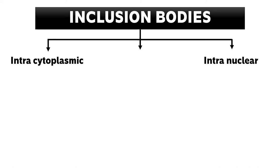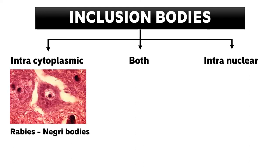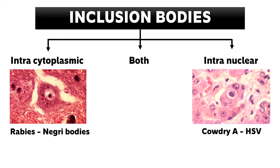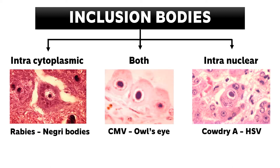We can classify the viral inclusion bodies into three different categories: intracytoplasmic, intranuclear, and both intracytoplasmic as well as intranuclear — based on the location of the inclusion bodies in virus-infected cells. The best example for an intracytoplasmic inclusion body is the Negri body, seen in rabies virus-infected cells. The best example for an intranuclear inclusion body is Cowdry type A, commonly seen in herpes simplex virus-infected cells. In cytomegalovirus we have owl's eye appearance inclusion bodies, which are both intranuclear as well as intracytoplasmic.